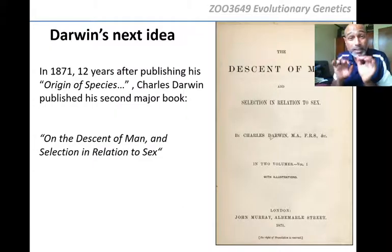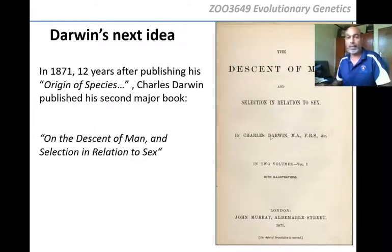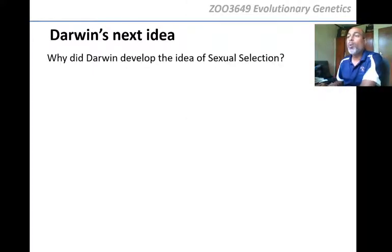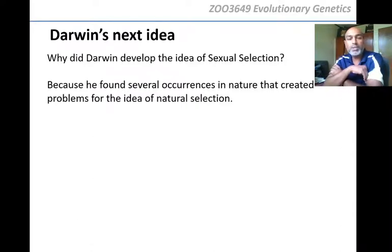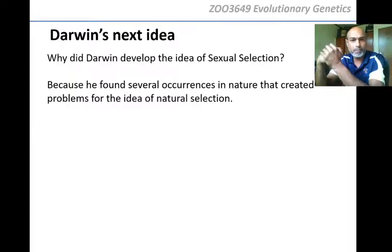Both of Darwin's ideas — natural selection and sexual selection — involve selection, involve a choice. It just depends on who is making the choice. Darwin developed the idea of sexual selection because he found that in nature there were several situations that presented a problem for his theory of natural selection.